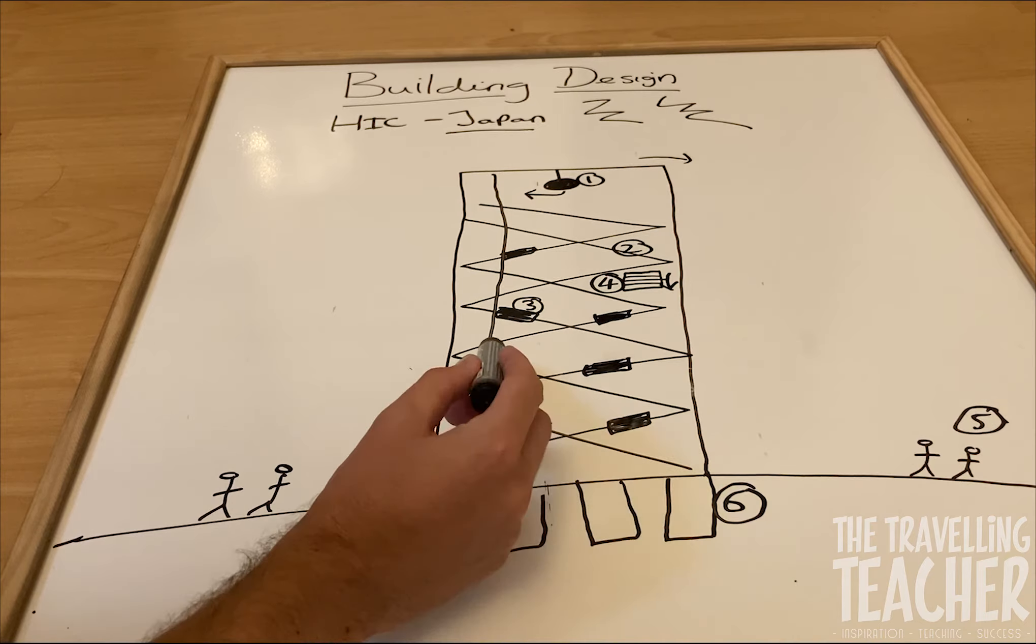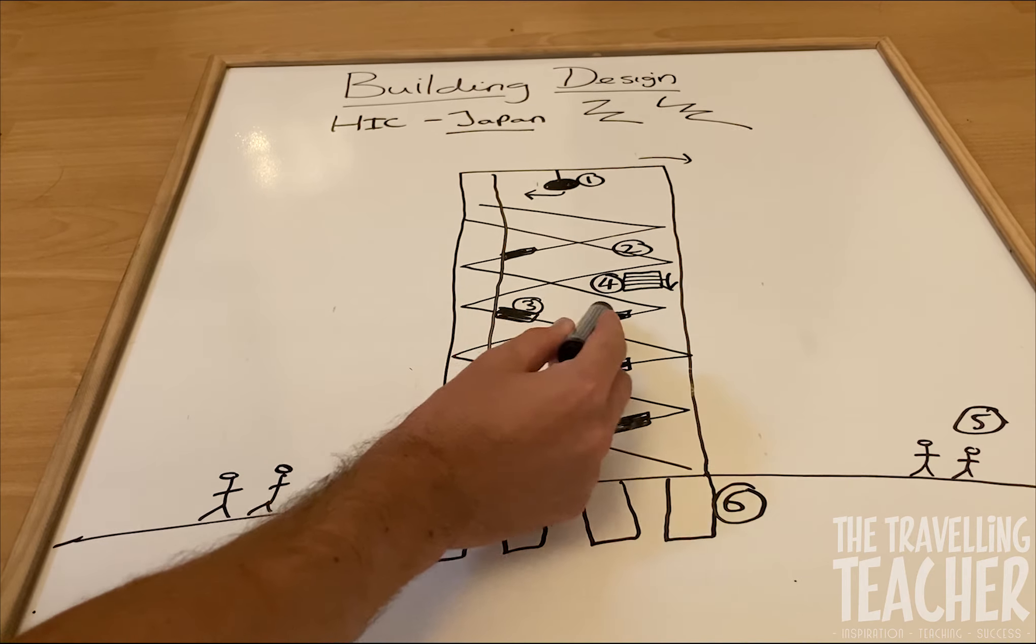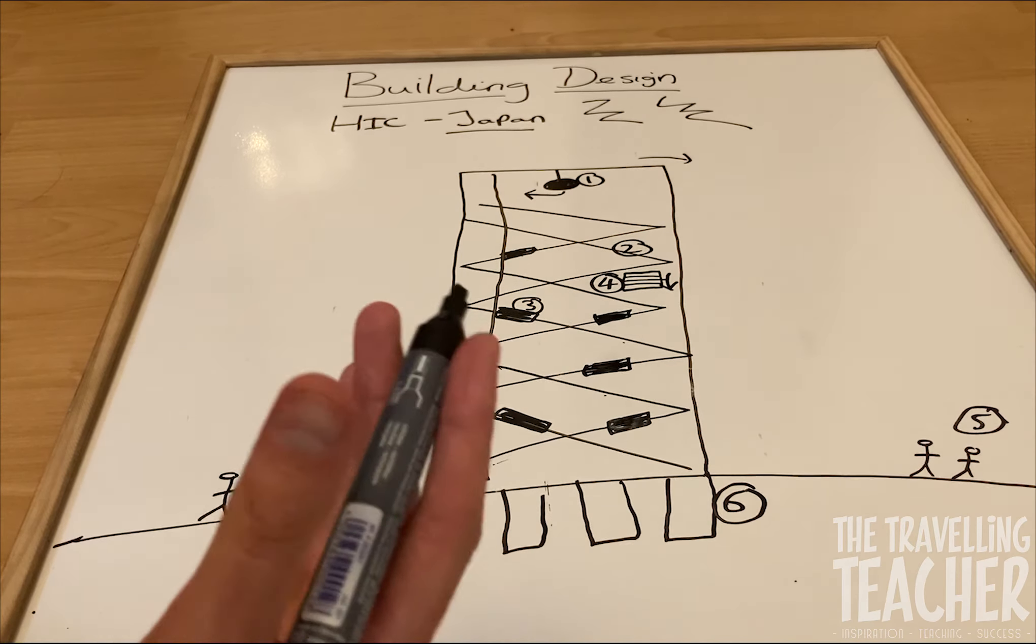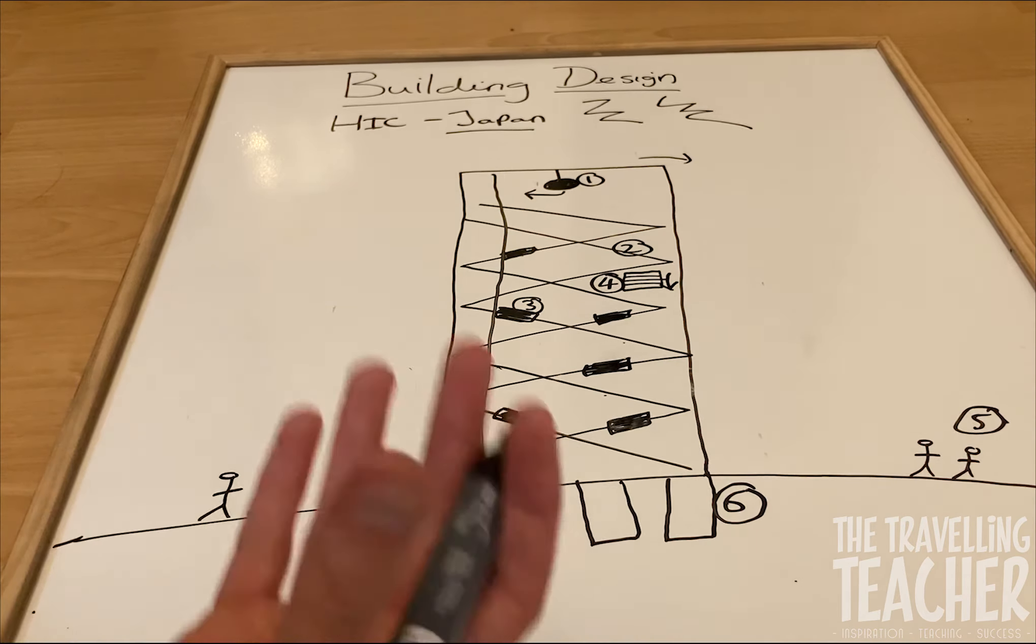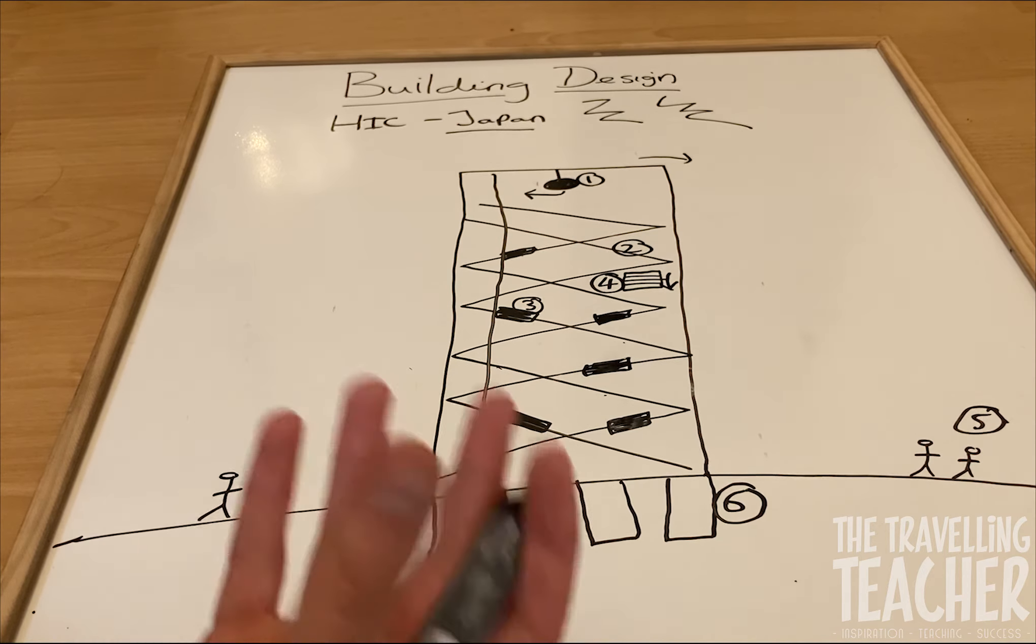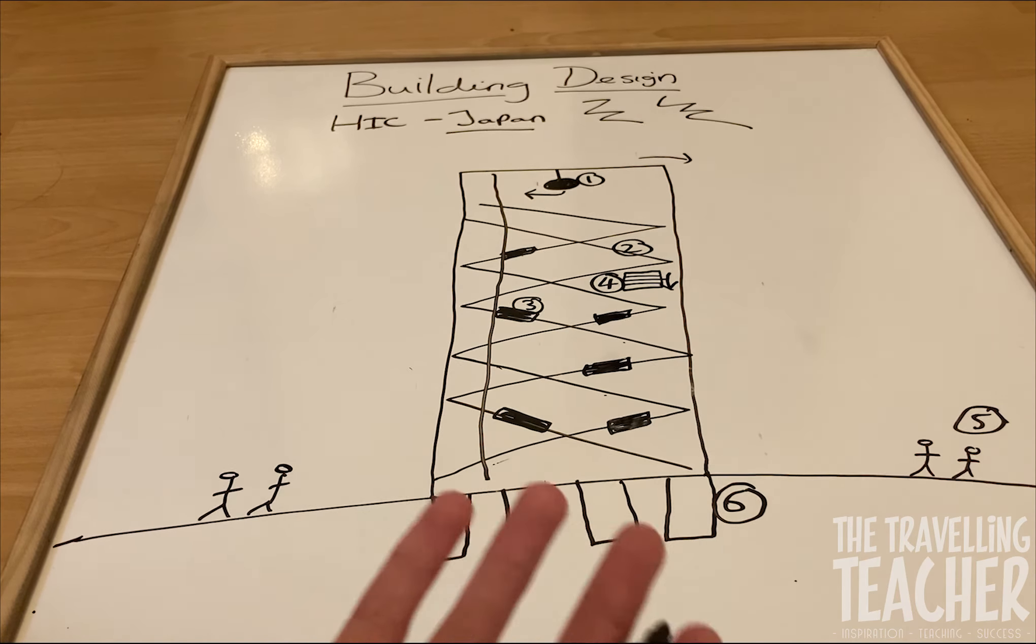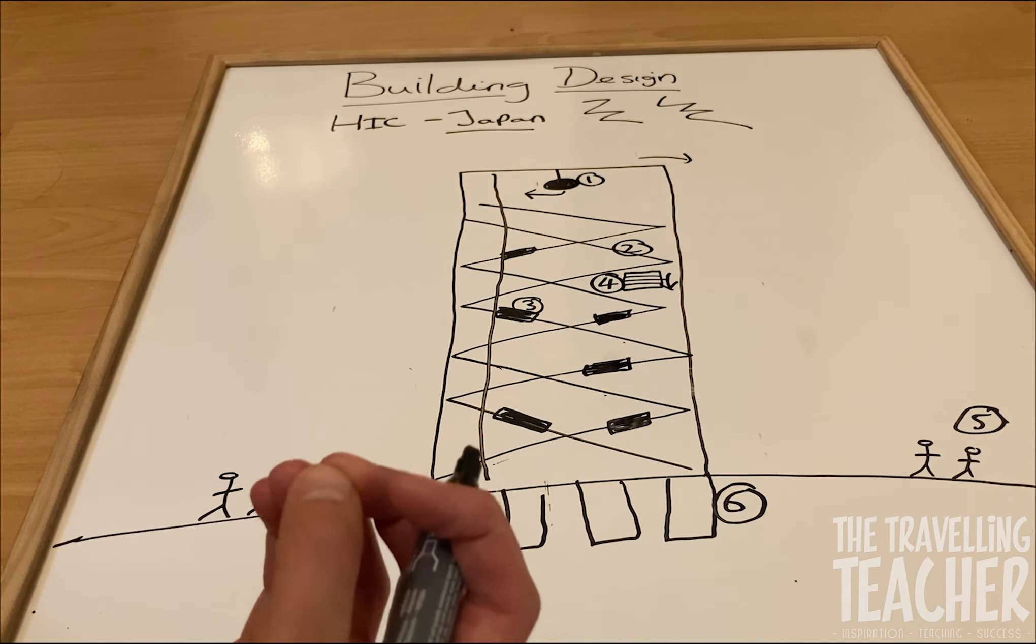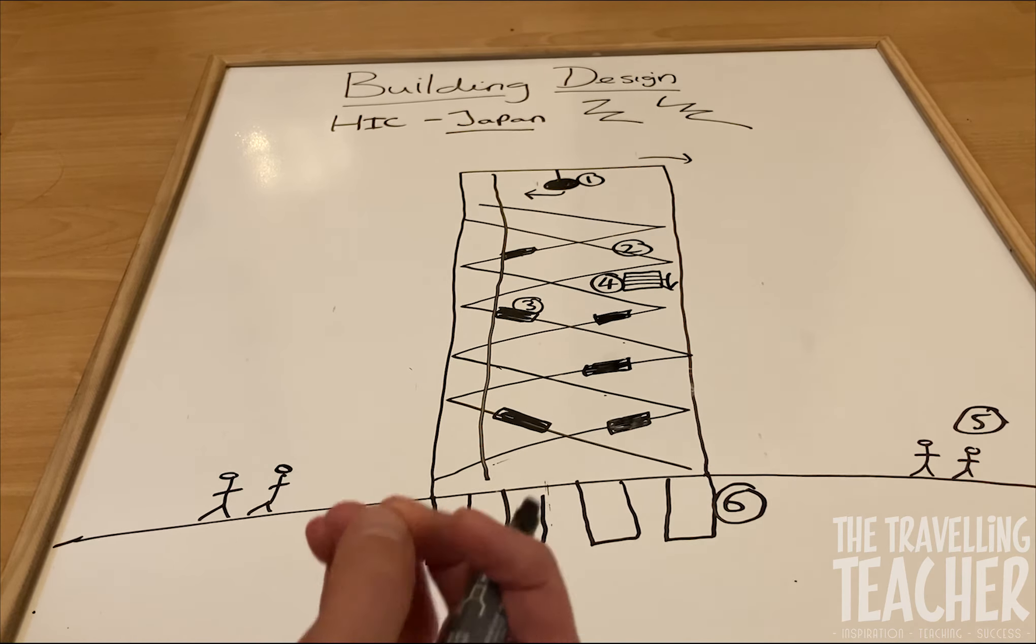And attached to this steel bracing are these shock absorbers. Now obviously a building could have hundreds of these attached to them. And obviously the general purpose of a shock absorber is to absorb the shock, absorb the energy of the actual earthquake itself.